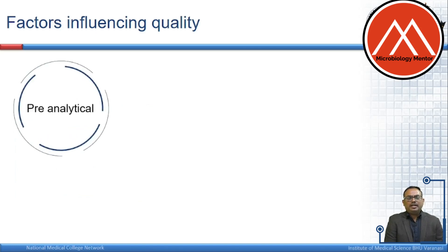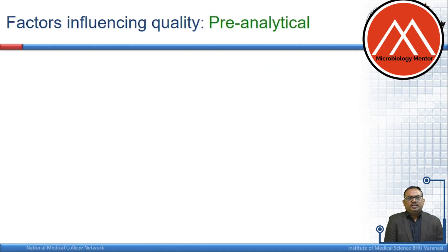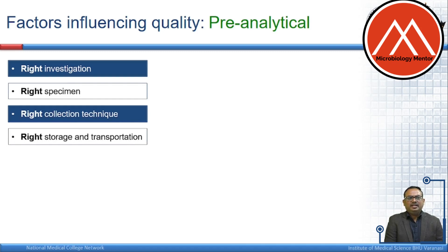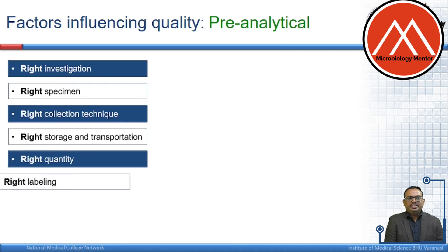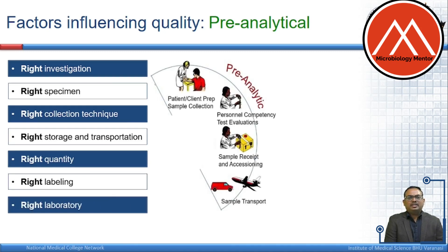The factors influencing the quality of results can either be pre-analytical, analytical, or post-analytical. Pre-analytical factors include: right investigations, right specimen, right collection technique, right storage and transportation, right quantity, right labeling, and right laboratory — all of which influence the quality of the report.